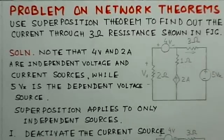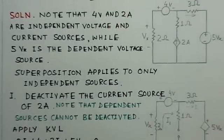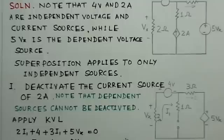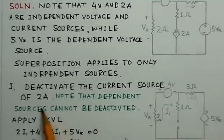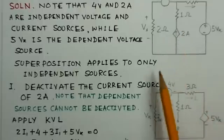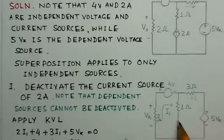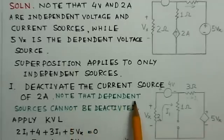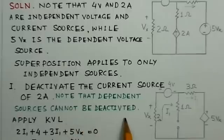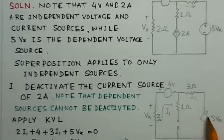Let us see the first case where we deactivate the current source of 2 amperes. The current source is replaced by its internal impedance, that is open circuit. Note that the dependent sources cannot be deactivated, so we are not to deactivate these dependent sources. That source is being left as such.